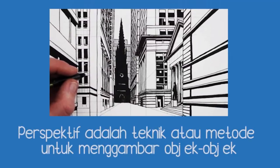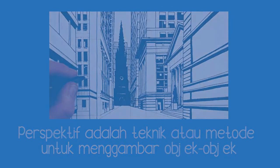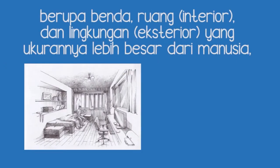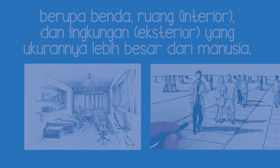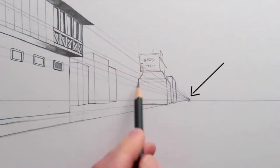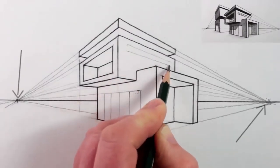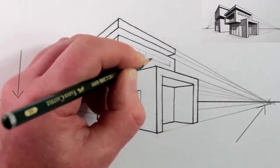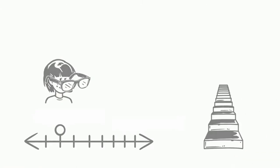Perspektif adalah teknik atau metode untuk menggambar objek-objek berupa benda, ruang atau interior, dan lingkungan atau eksterior, yang ukurannya lebih besar dari manusia. Gambar dengan hukum perspektif berarti menggambar dengan pandangan satu arah atau dua titik lenyap. Teknik ini ada karena keterbatasan jarak pandang mata kita dalam melihat objek.